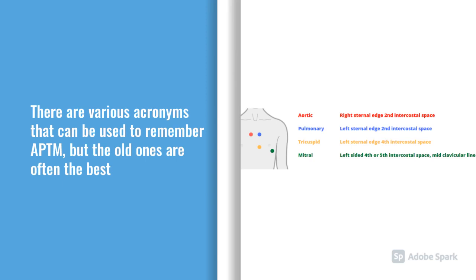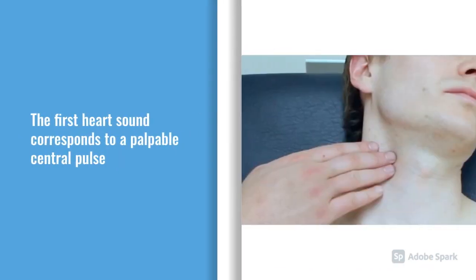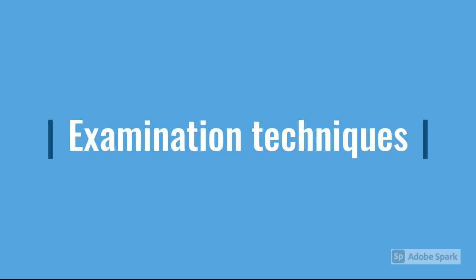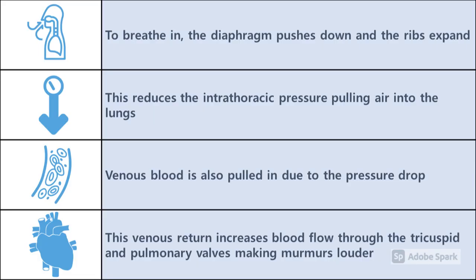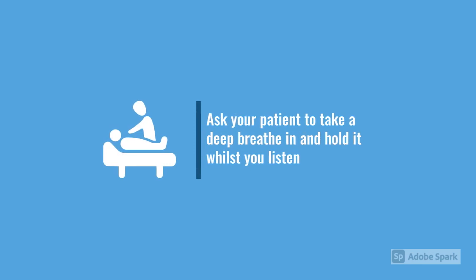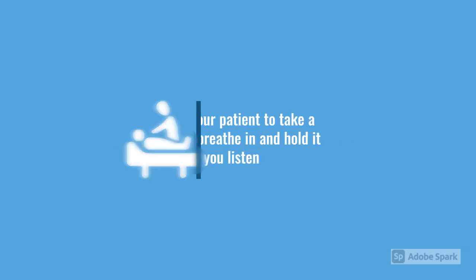There's a simple way to work out whether you're listening to the first or second heart sound: the first heart sound corresponds to a palpable pulse. Right-sided murmurs are louder on inspiration — when you inspire, you drop your intrathoracic pressure, which increases blood flow through the tricuspid and pulmonary valves. So if you ask your patient to take a deep breath in while you're listening, you'll hear it more loudly while they're breathing in.